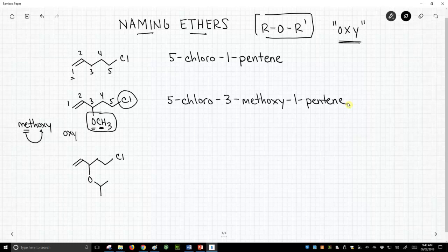Okay, let's go to another very similar example. Again, we have an alkene. That's our high priority group, and that high priority group is attached to this carbon chain, 5-carbon chain. So this, again, is going to be a pentene. It's going to be 5-chloro, just as we said before.